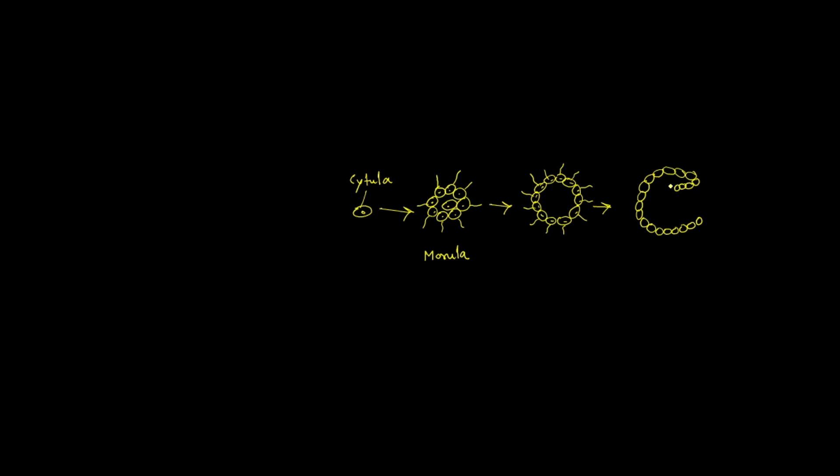A gastraea stage which the gastrula of modern embryos recapitulates would arise from the blastea by a separation of locomotory and digestive regions, the latter being posterior and gradually tucking in to form an interior endoderm.